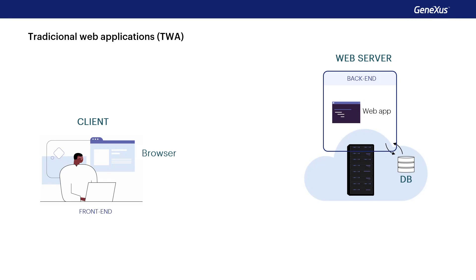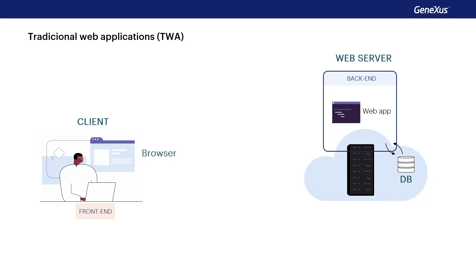First, we'll look at traditional web architecture. Web applications have a part that runs on the internet browser, the client, and a part that runs on the web server, the server. The part that runs on the browser is called the front end and the part that runs on the server is called the back end of the application.